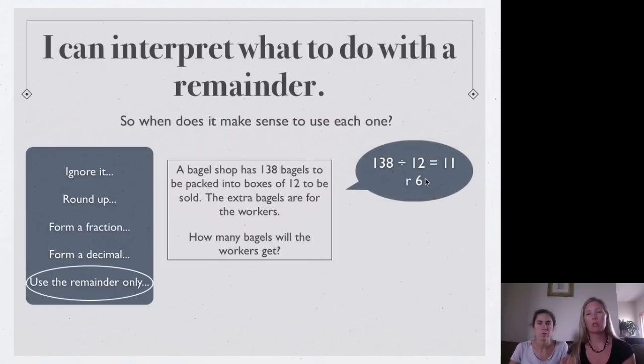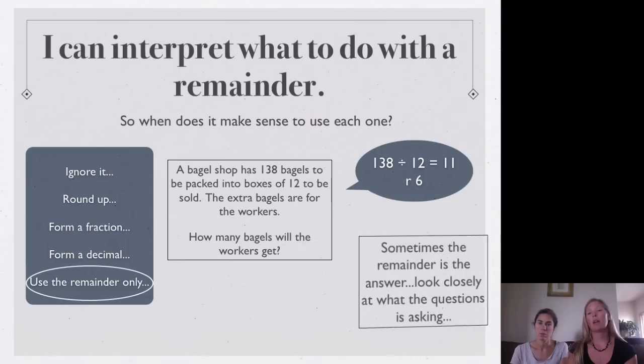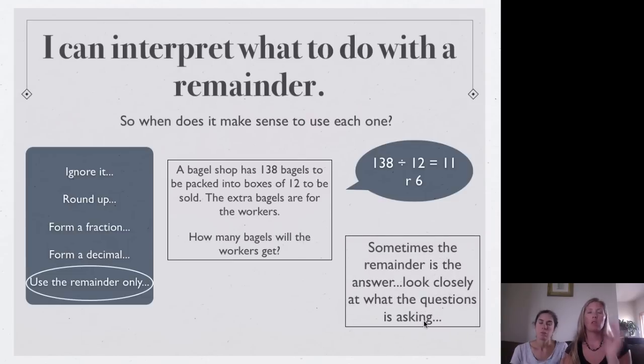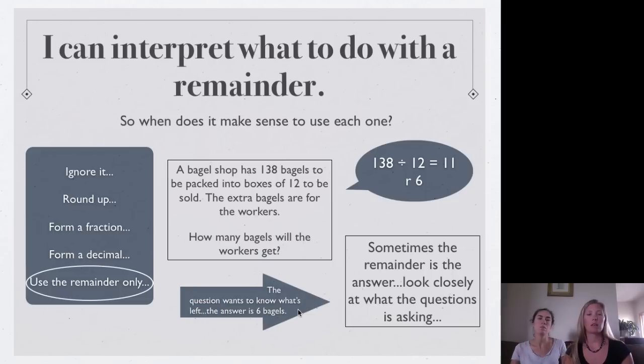So, we take our 138, divide it by 12, 11. So, that tells us they're going to have 11 boxes, but that's not the question. The question is, how much will the workers get? So, you have to be really careful to look closely at what the question is asking. So, in this case, the answer is 6. It is the remainder. The workers will get 6 bagels.